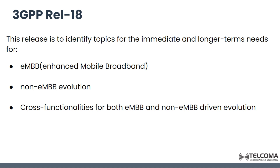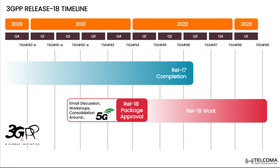This release is basically so that we can identify the different topics for the immediate and longer terms — why we require the immediate and longer terms for enhanced mobile broadband services, non-enhanced mobile broadband evolution, and all the cross functionalities for both enhanced mobile broadband and non-enhanced mobile broadband driven evolution. 3GPP Release 18 has plans for eMBB, non-eMBB, and cross functionalities between both.